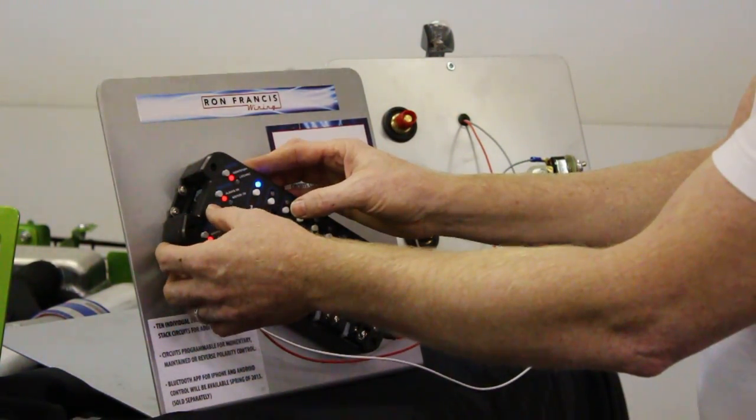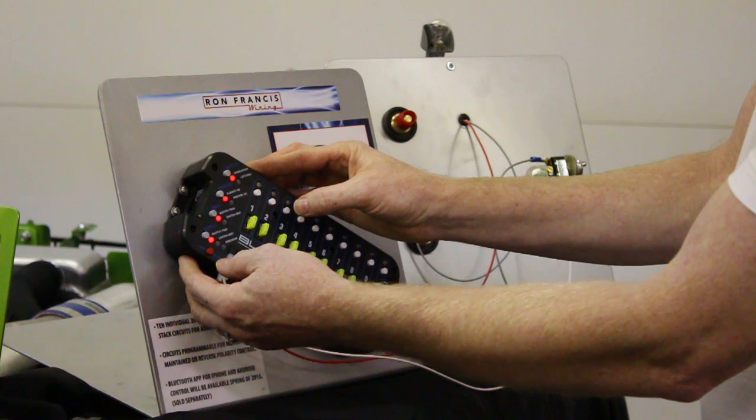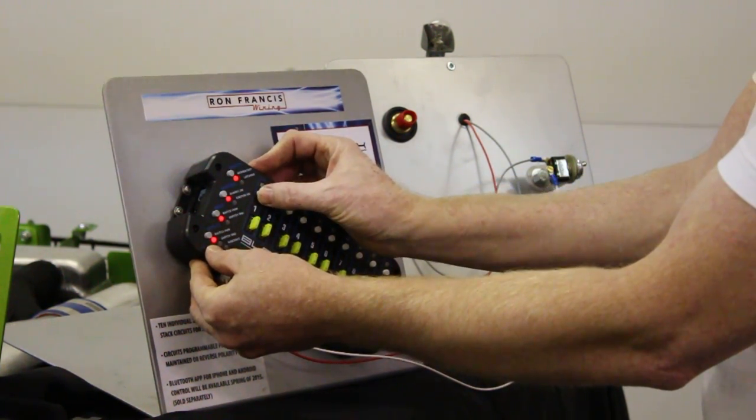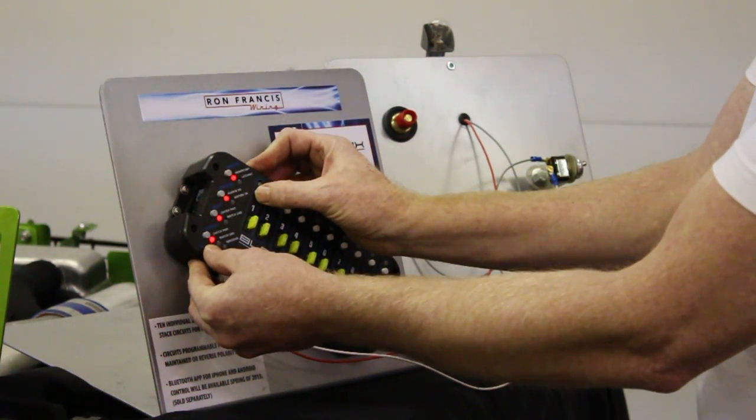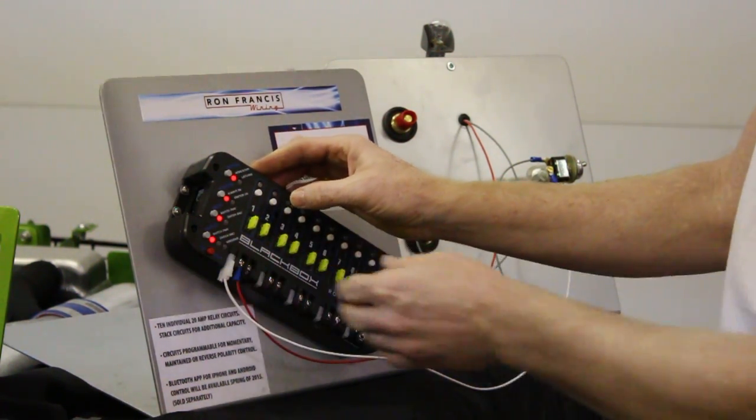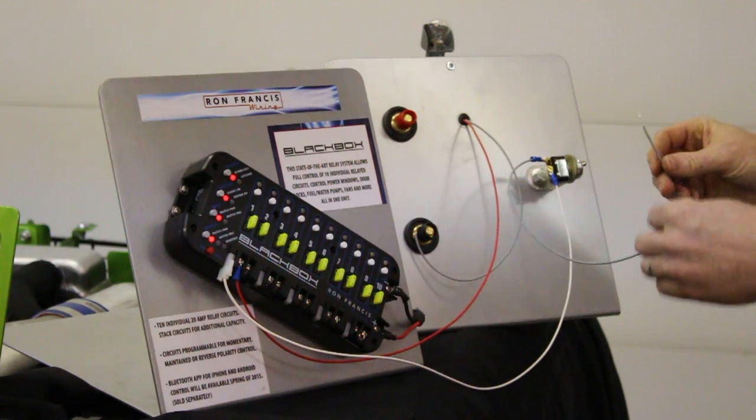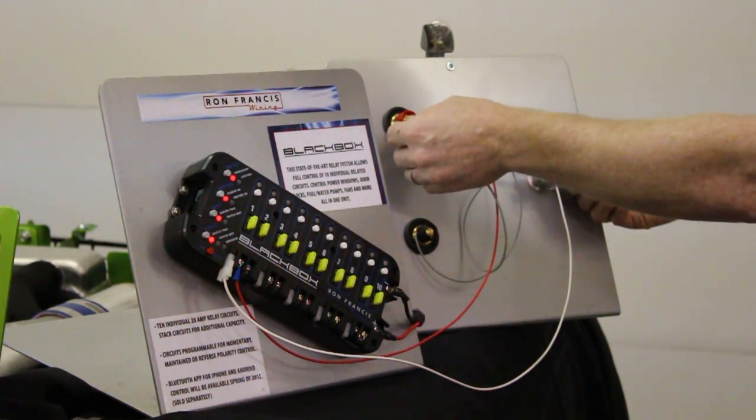So we put the input, we change it from switched ground to switched power, and I hit the program and circuit number one. We have those blue lights blinking, which tells us that it is programmed now. And now if I take the other end of that toggle switch and put it to power, we got the power trigger going on.